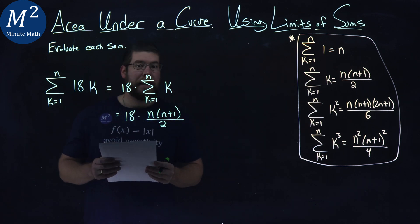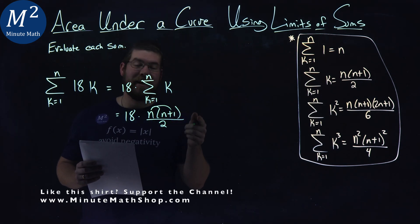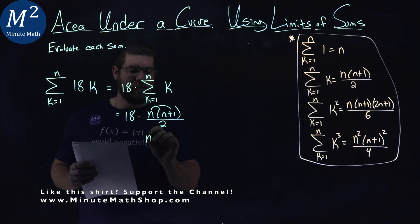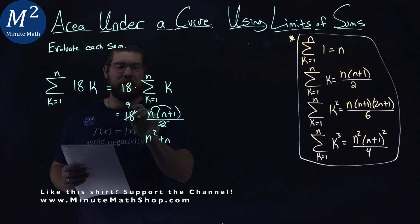Now we want to simplify this out a little bit. We know the n times the n, and then n times n plus 1 comes out to be n squared plus n, and the 18 and the 2 simplify to be that 9.